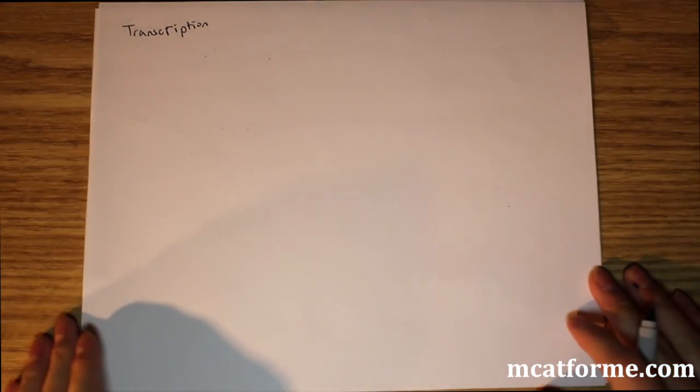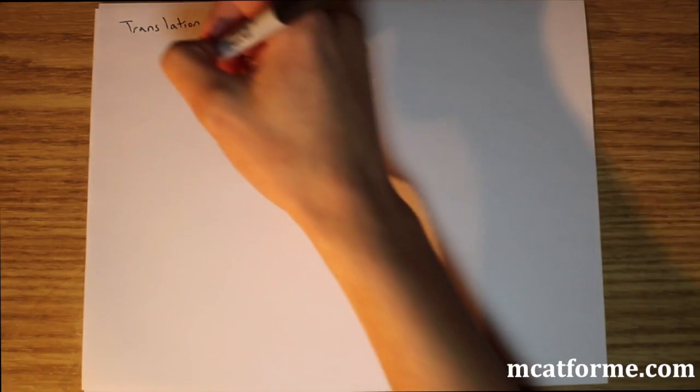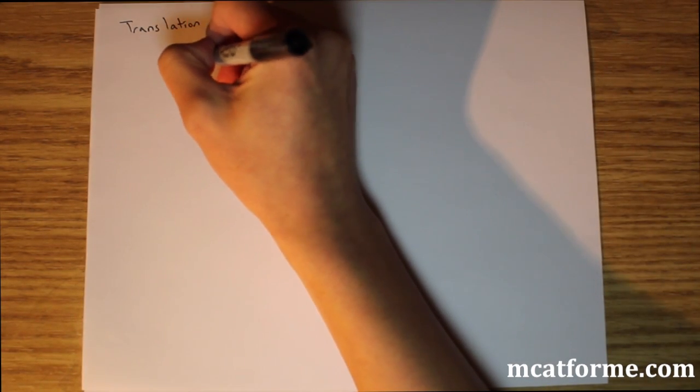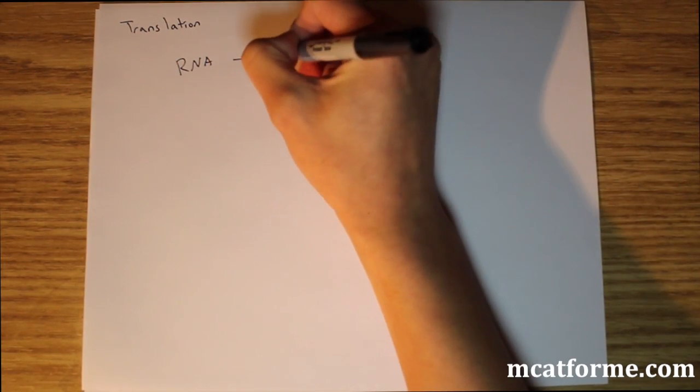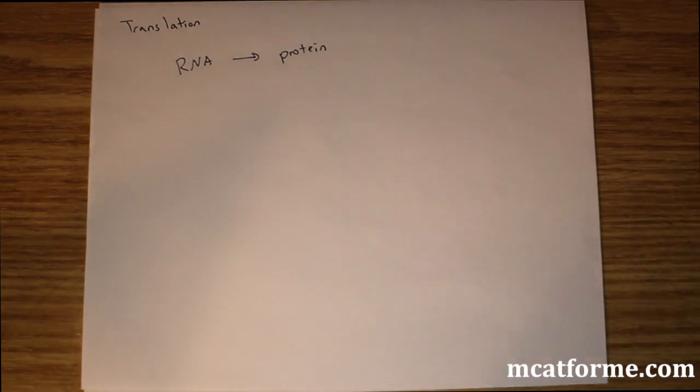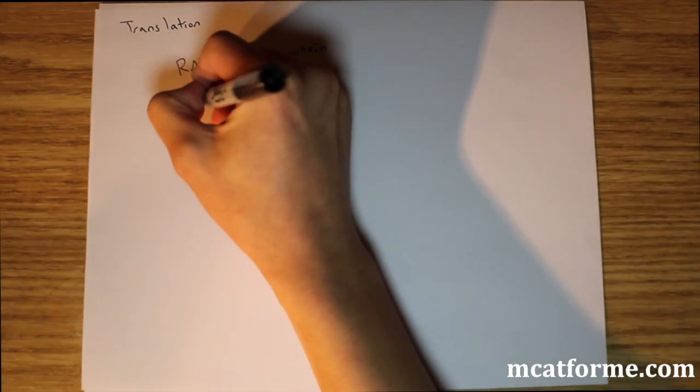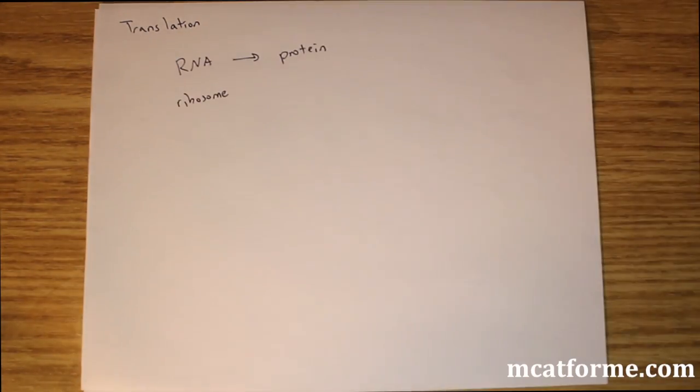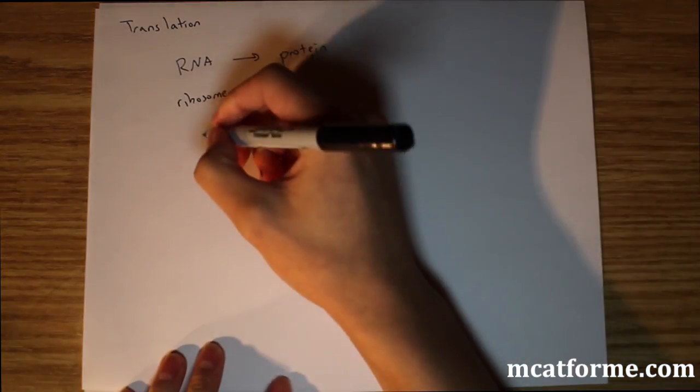So we saw what transcription was and it was pretty much just DNA to RNA. So now the next thing we're going to be looking at is translation. And this is a very general overview. Translation again is RNA going into protein. So RNA to protein, this is the key part and it occurs in the ribosome. And so ribosomes, they're made up of different things.